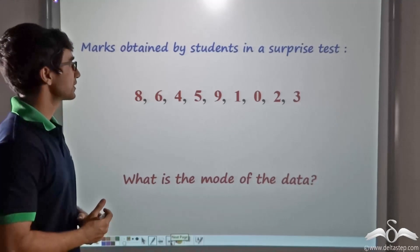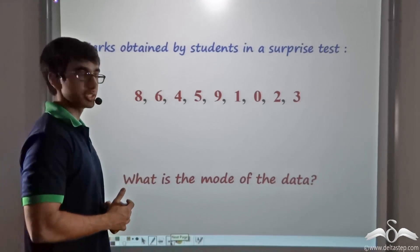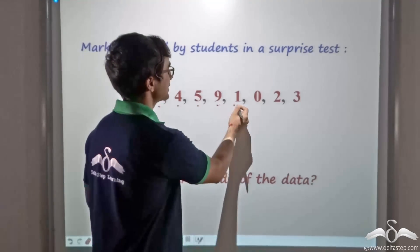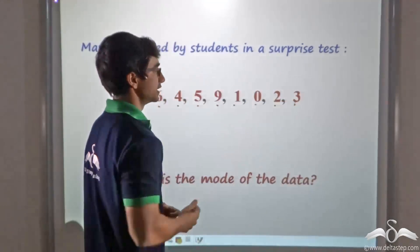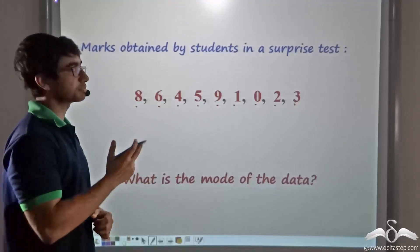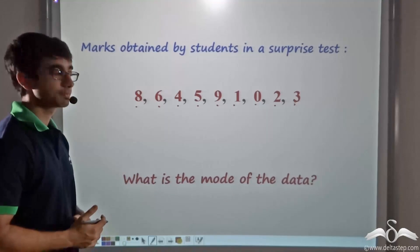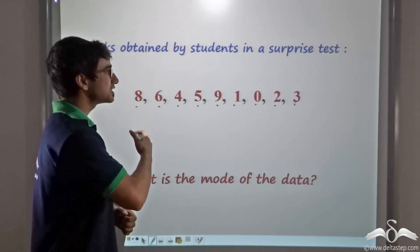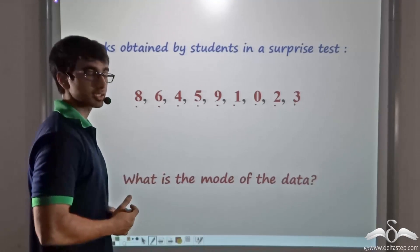In a similar manner, if we reduce the number of students, let's say we consider 9 students and the teacher has taken a surprise test of these nine students. As you can see, no mark has been repeated here. That is, each student has obtained unique marks.